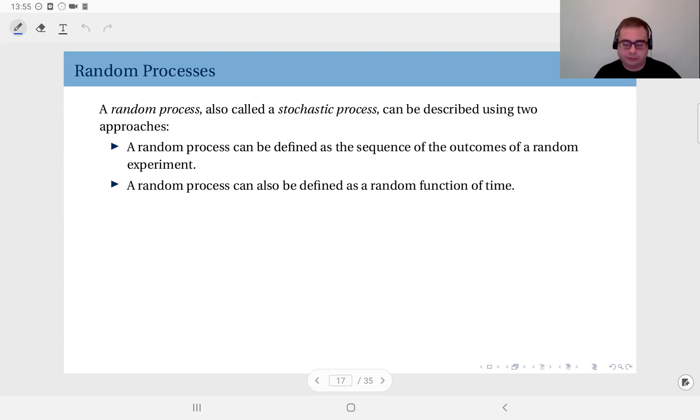The other approach is random process is a random function of time. So you have a function with respect to time, but the output or the outcome is random, it has a distribution. Now these two approaches, they are not that different. It's just two different ways to look at the same thing.